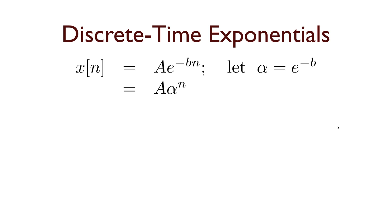In this case, we can think of a discrete time exponential, x(n). For analogy with the continuous time case, we could write it as A e to the negative bn. However, it's common in notation to replace e to the negative b with alpha. And then we can describe the discrete time exponential as A alpha to the n. We usually write it this way, and underneath, you can see that it is the same sort of signal as a continuous time exponential.